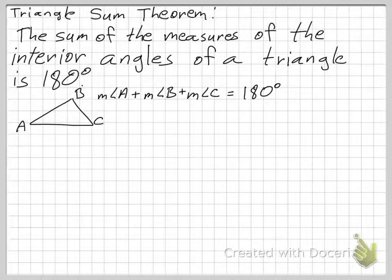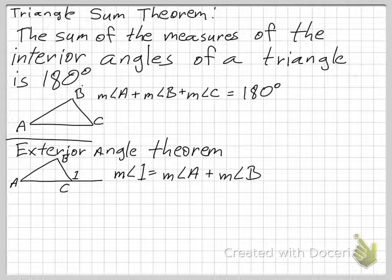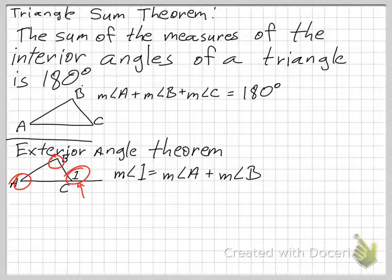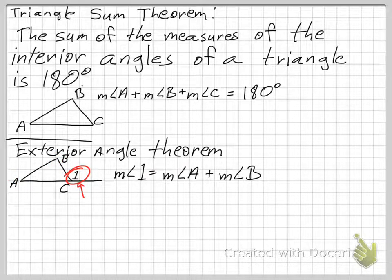Another concept: if you extend one of the legs, you get the Exterior Angle Theorem. The exterior angle is equal to the sum of the measures of the two remote — or far away — interior angles. So the measure of angle 1 equals the measure of angle A plus the measure of angle B.